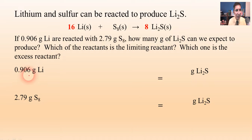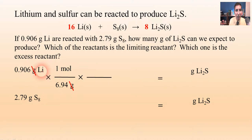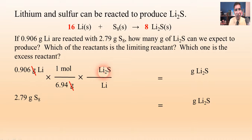Starting with 0.906 grams of lithium. Step one: convert to moles. In our first conversion factor, grams go on the bottom and one mole on top. Looking at the periodic table, there are about 6.94 grams in a mole of lithium, so we can cancel grams. Step two is the mole ratio. In the second conversion factor, lithium goes on the bottom since that's what we're starting with, and lithium sulfide goes on the top. Right out of the balanced equation, lithium sulfide has a coefficient of 8 and lithium has 16, so this is an 8 to 16 mole ratio. You have to have a balanced equation or you'll get the wrong answer.